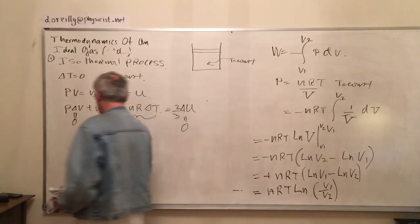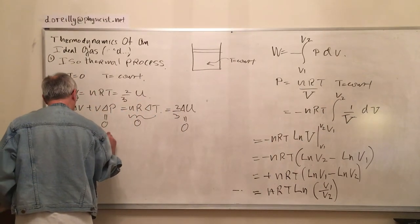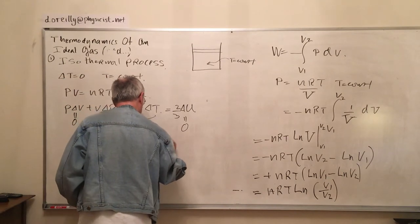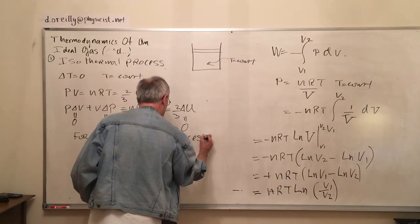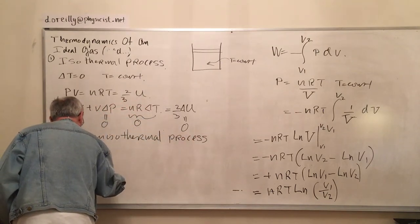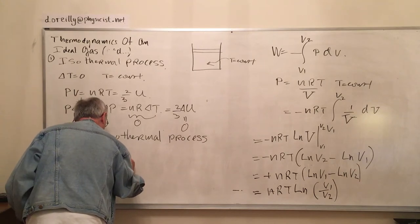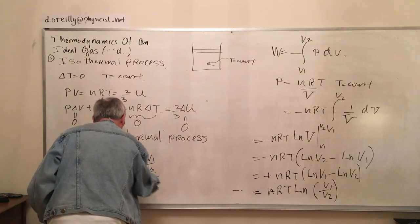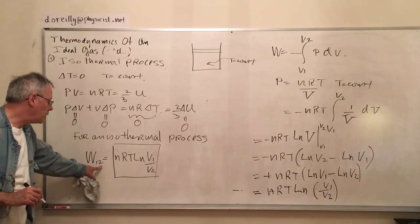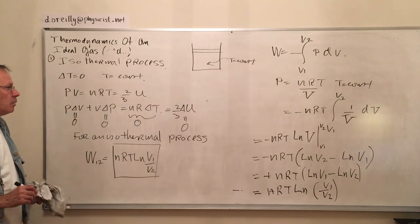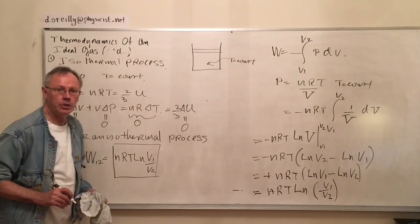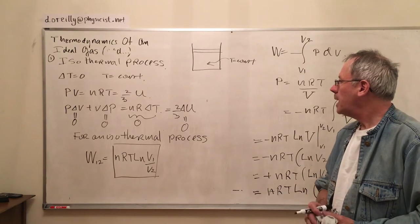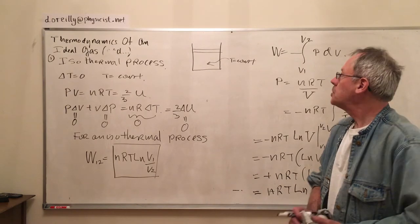Well when we subtract logs it's equivalent to division. So I have the useful result: the work done from point 1 to point 2, following the path defined by P equals nRT over V, is nRT ln(V1/V2). Now that's the isothermal process, and we'll do some examples with that.